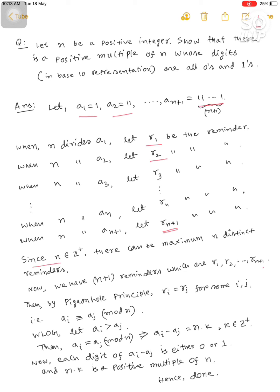Since n belongs to Z+, there can be maximum n distinct remainders, and the remainders are 0, 1, 2, ..., n-1. These are the possible remainders.